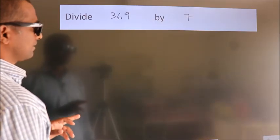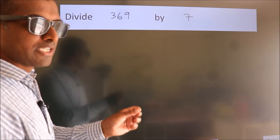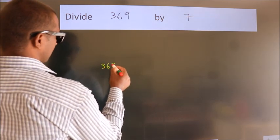Divide 369 by 7. To do this division, we should frame it in this way: 369 here, 7 here.